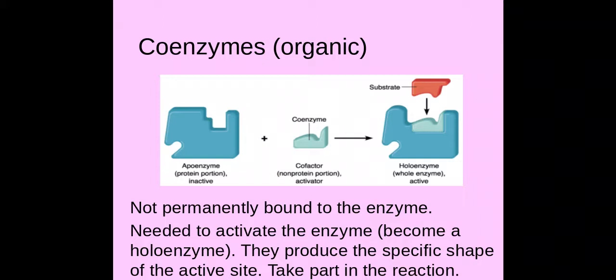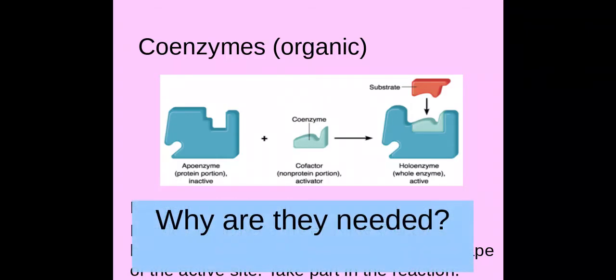When you get into A2, you'll meet coenzymes a lot in respiration and photosynthesis — examples include NAD, FAD, and NADP. All you need to know at AS is that a coenzyme is organic and it's used to help form the enzyme-substrate complex. You also need to know that as the concentration of coenzymes increases within a reaction, the rate of reaction will also increase.